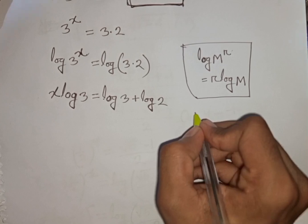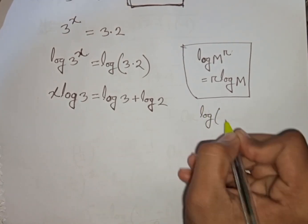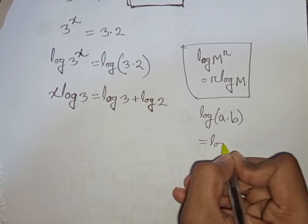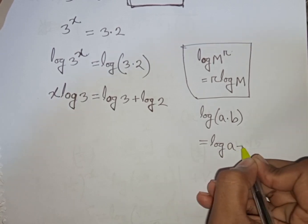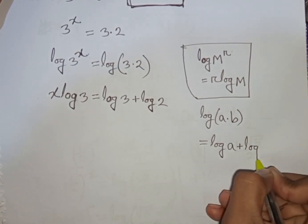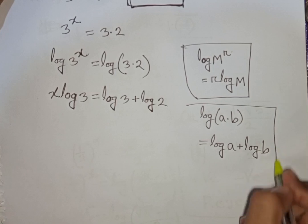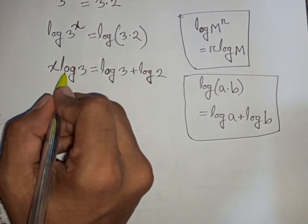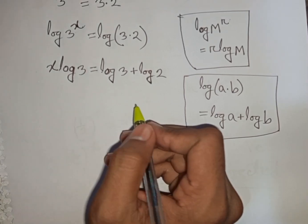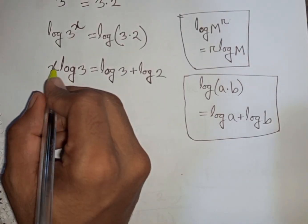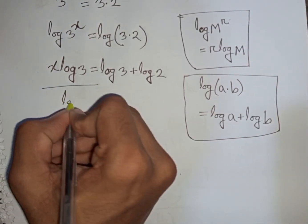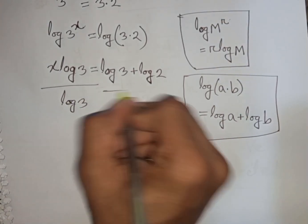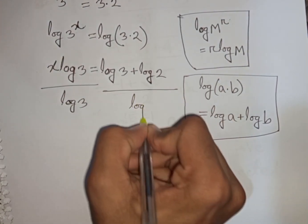According to the rule, log of a times b is equal to log a plus log b. Now we divide both sides by log 3 because we need the value of x. So we divide by log 3 on both sides.